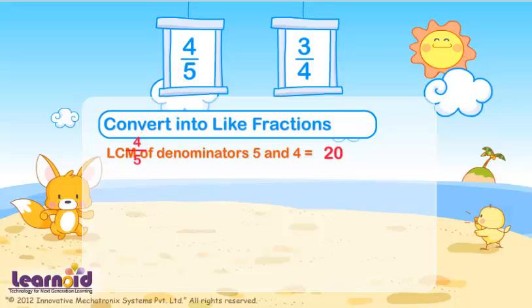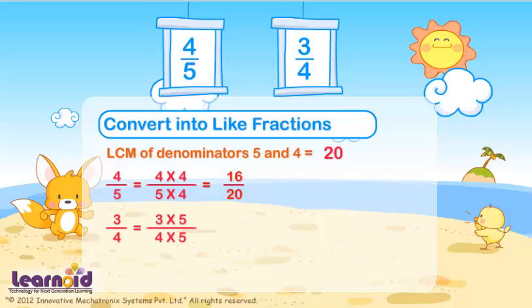To make both denominators equal to 20, multiply 4 by 5 with 4. We get 16 by 20. Multiply 3 by 4 with 5. We get 15 by 20.